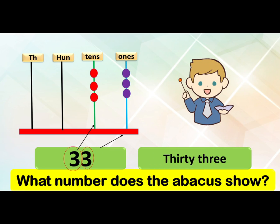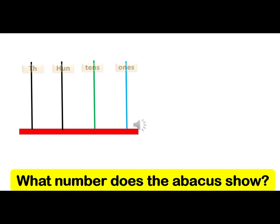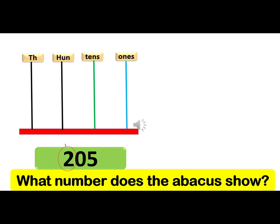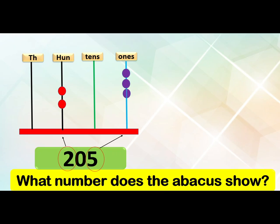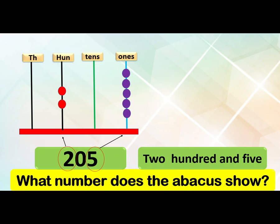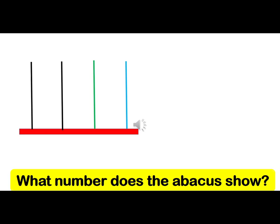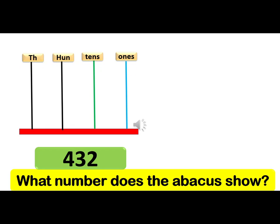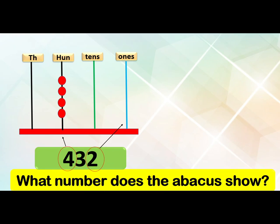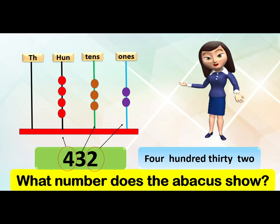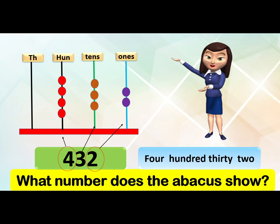This is thirty-three — three tens, three ones. Two hundred and five. Four hundred thirty-two.